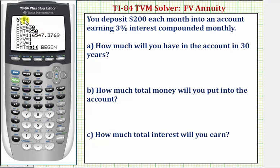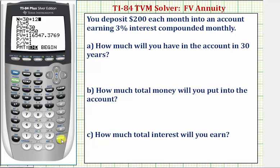N is equal to the total number of compounds over the 30 years. Because the interest is compounded monthly, and there are 12 months per year, N will be 30 times 12, or 360. We can enter 360 or enter 30 times 12, and when we press Enter it will calculate this value for us.